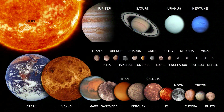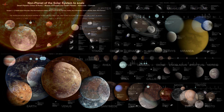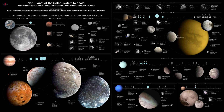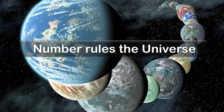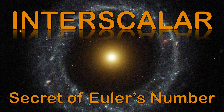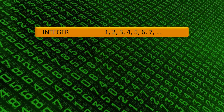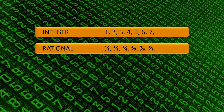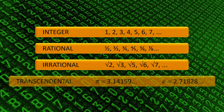The solar system hosts at least 800,000 orbiting bodies — planets, planetoids, moons, and many asteroids. How can this huge system be stable? Through the voice of Pythagoras, ancient knowledge teaches: number rules the universe. In our first video, 'The Secret of Euler's Number,' we learned that the difference between integer, rational, irrational, algebraic, and transcendental numbers is not only a mathematical task but also an essential aspect of stability in complex systems.